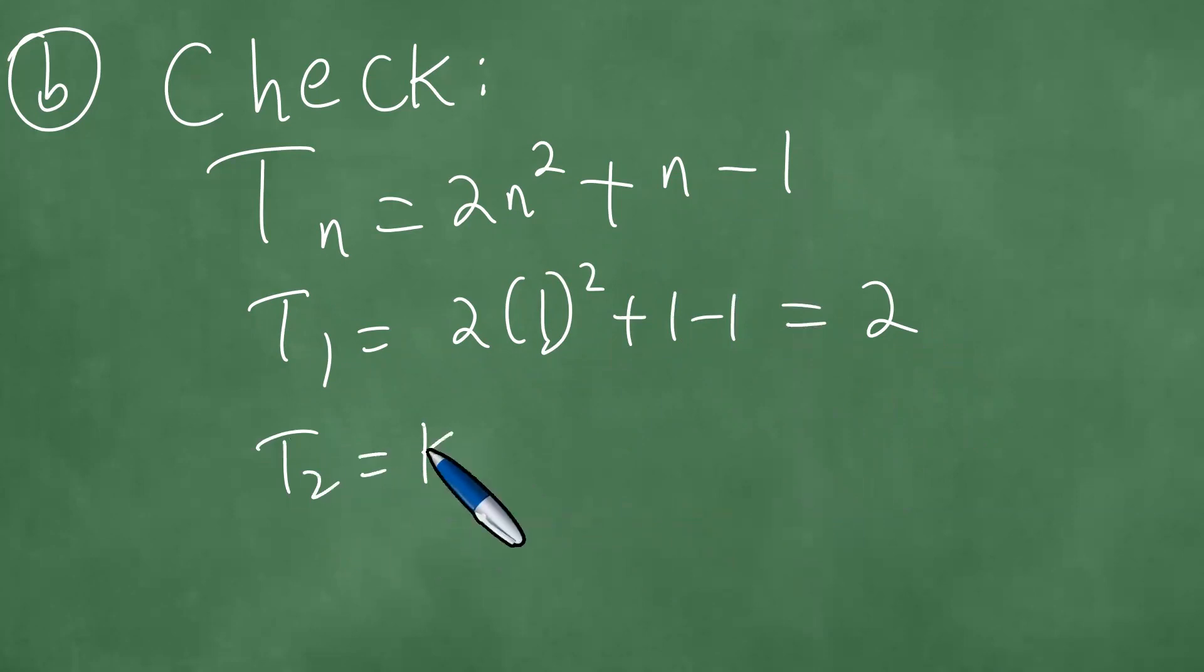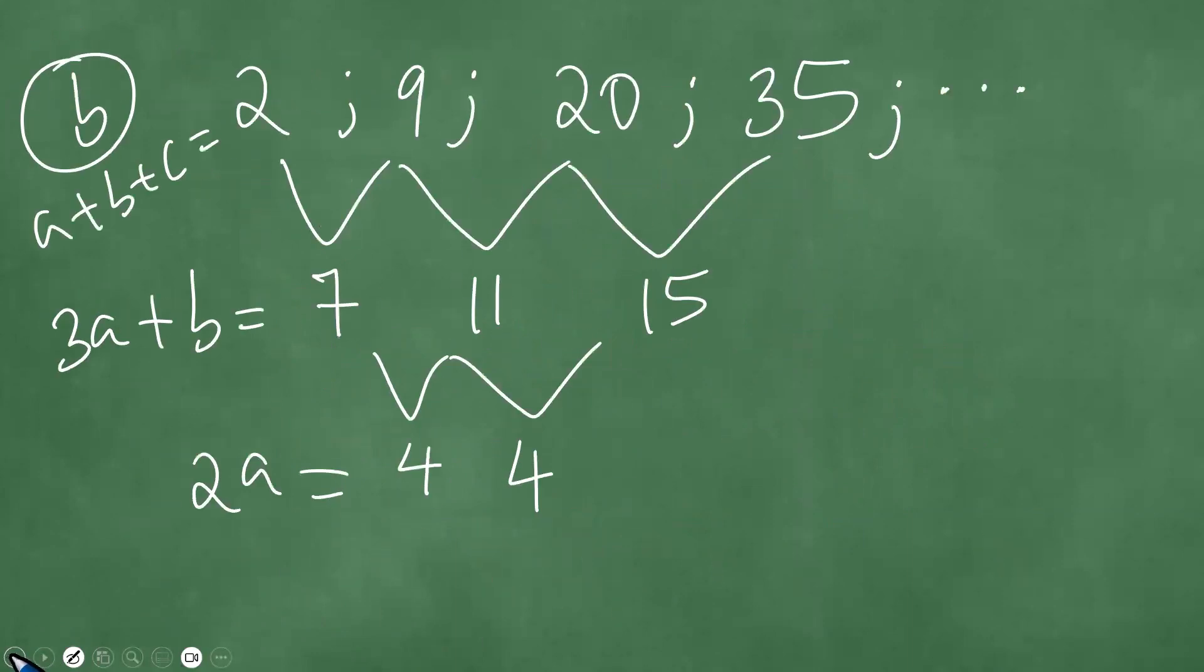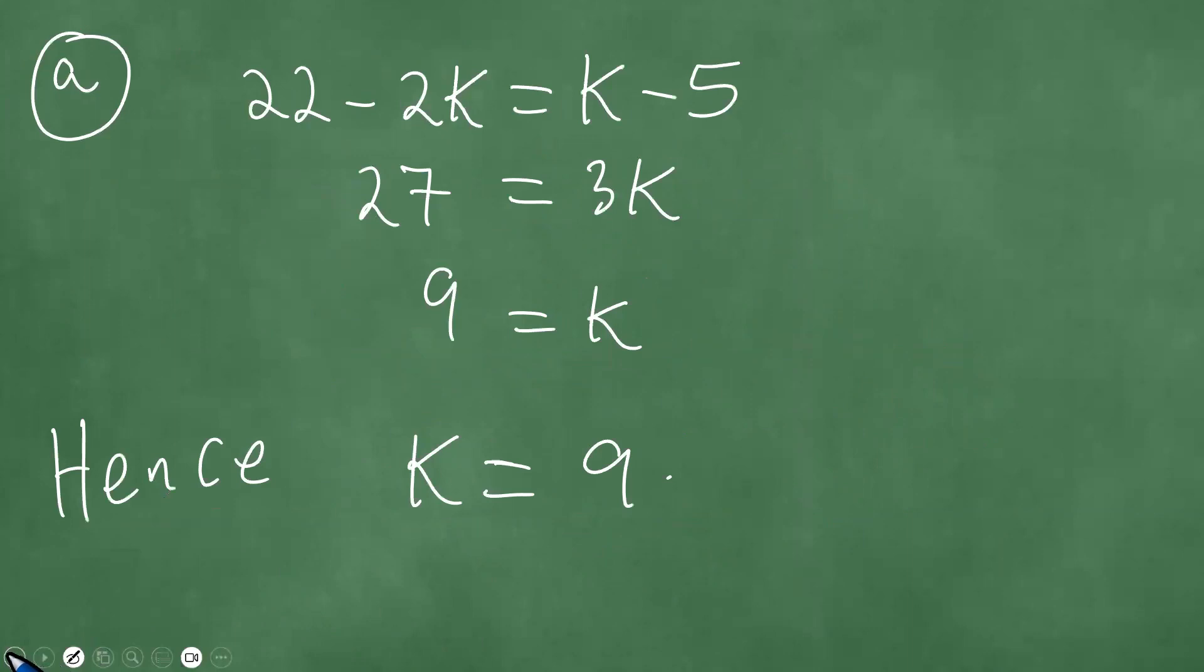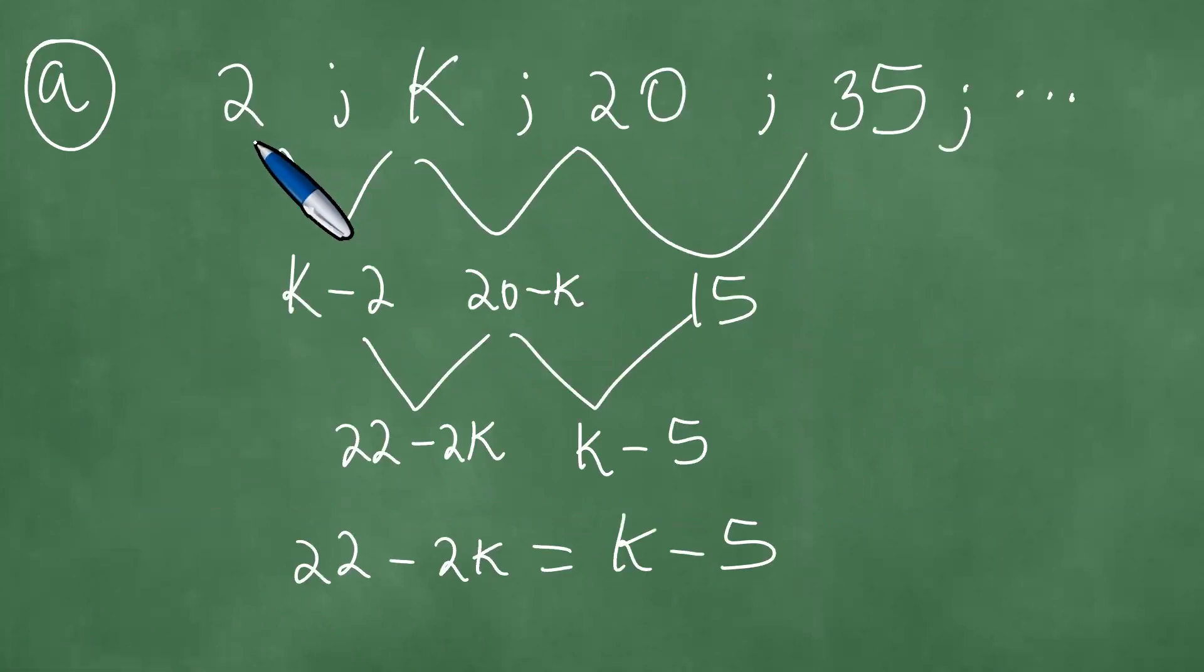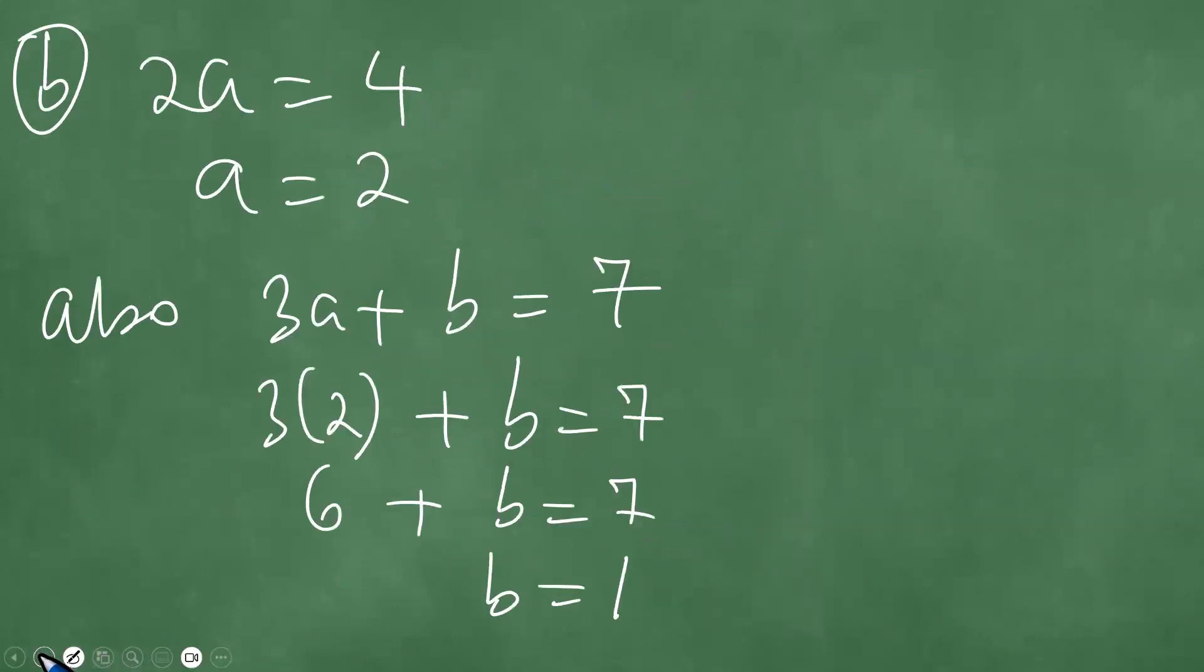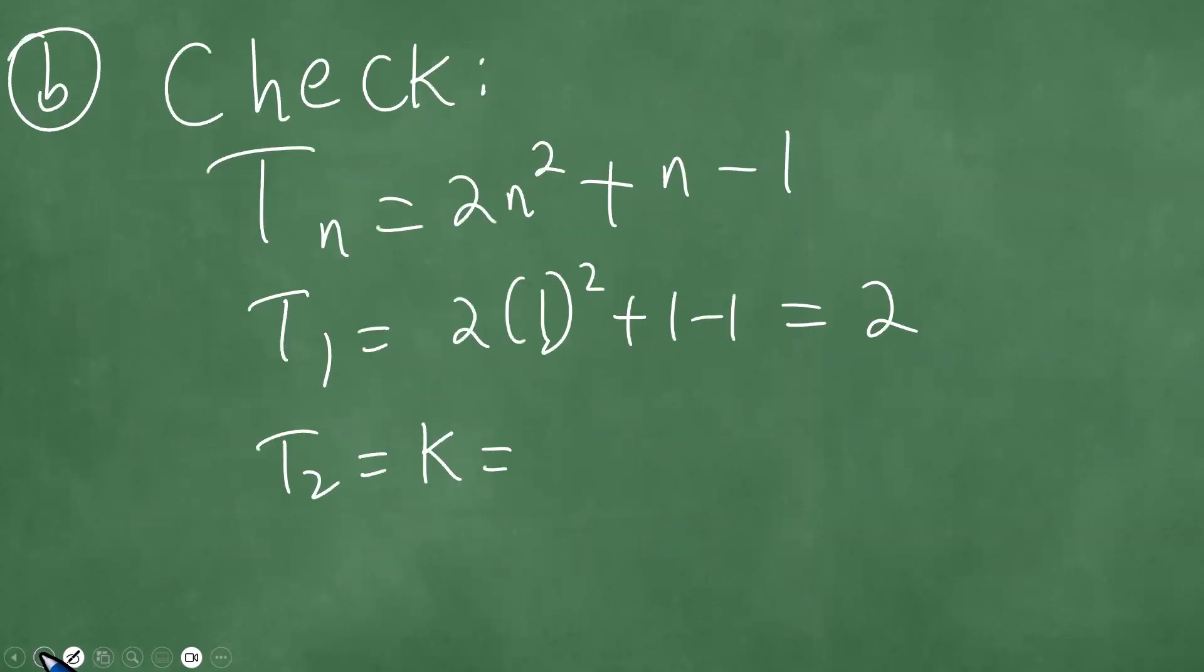T2, in this case, equals k. Remember that T2 equals k, and we remember that k is 9. We recall that we had the sequence 2, k, 20, and 35, and we got k equals 9, so let's verify. This is 2 times 2 squared plus 2 minus 1, which is 2 squared, 4 times 2, 8, plus 2, 10, minus 1, which is exactly 9.